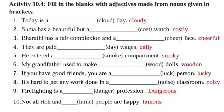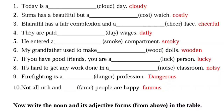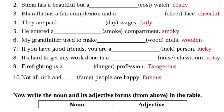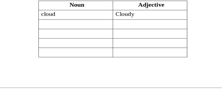For example: 'Bharati has a fair complexion and a cheerful face.' 'They are paid daily wages.' 'He entered a smoky apartment.' 'My grandfather used to make wooden dolls.' 'If you have good friends, you are a lucky person.' 'It is hard to get any work done in a noisy classroom.' 'Firefighting is a dangerous profession.' 'Not all rich and famous people are happy.' You have to write down all these nouns from the brackets and their adjective forms in the next column.